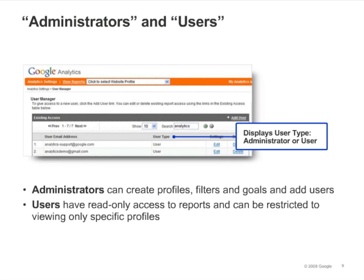There are two types of Google Analytics users. Administrators have access to all reports, and they can also modify Analytics Settings — they can create profiles, filters, and goals, and they can add users. Users only have read access to your reports and they can't modify Analytics Settings.